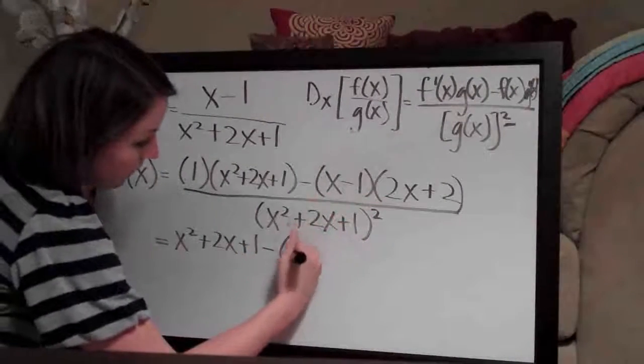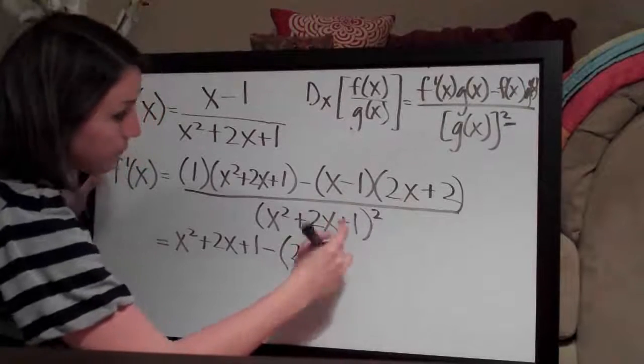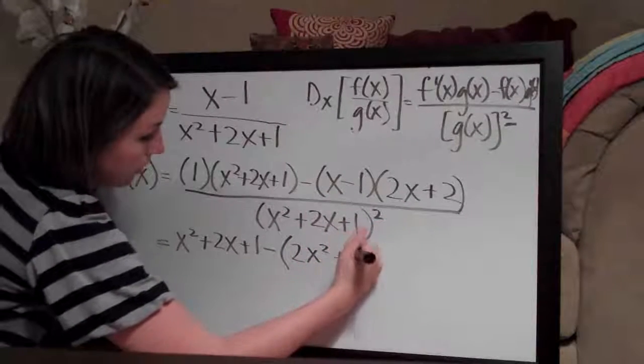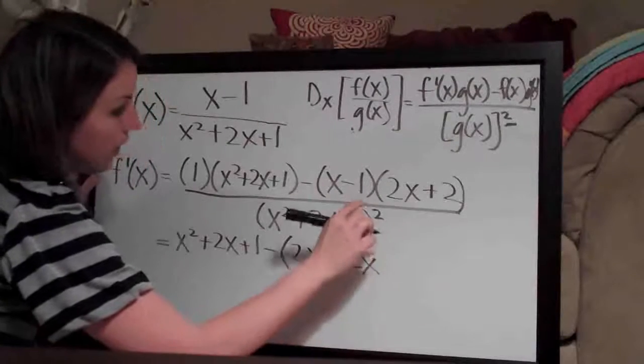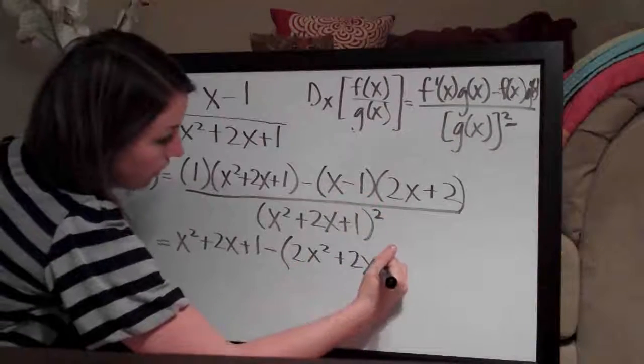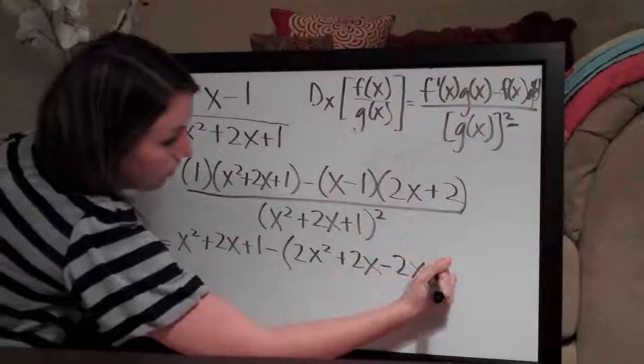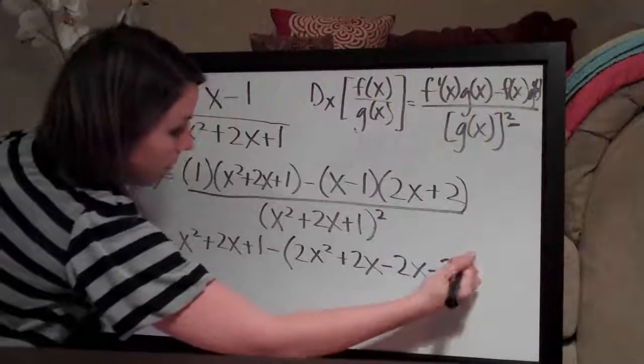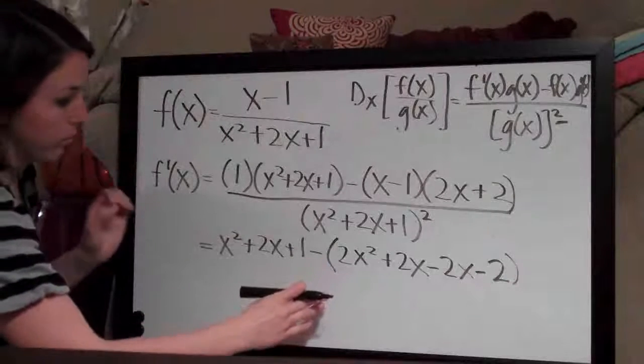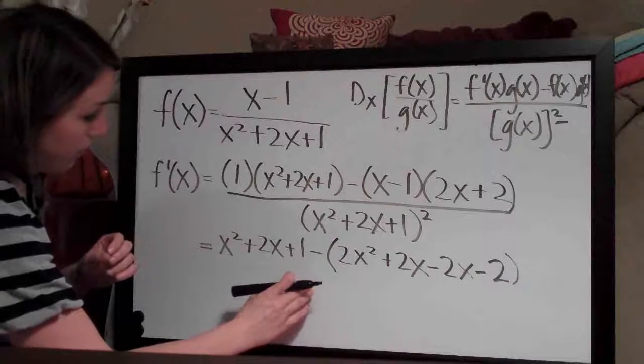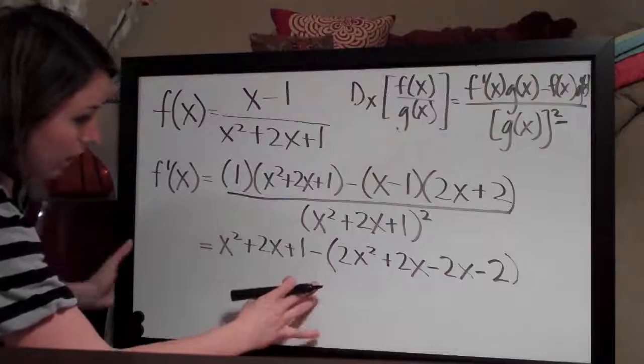so we'll multiply this out. x times 2x is 2x², x times 2 is 2x, then negative 1 times 2x is -2x, and negative 1 times 2 is -2. I'm not going to rewrite the bottom, so I'm just going to go forward with simplifying the top here.